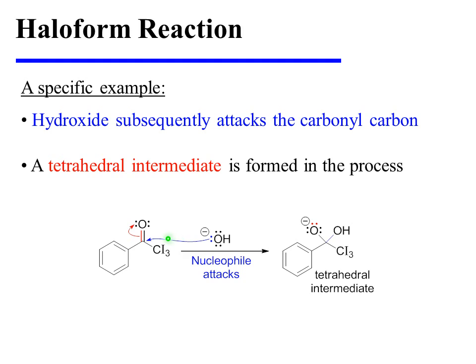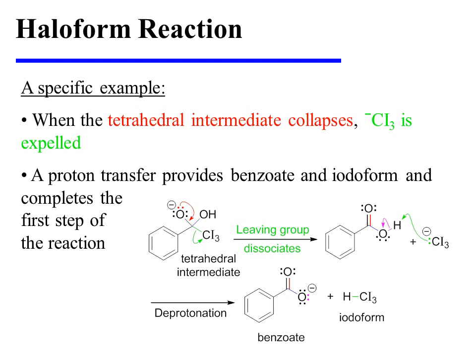Hydroxide subsequently attacks the carbonyl carbon, and as pi electrons are displaced onto oxygen, a tetrahedral intermediate is formed. When the tetrahedral intermediate collapses, the tri-iodo-methyl carbanion is expelled. A proton transfer provides benzoate and iodoform and completes the first step of the reaction.